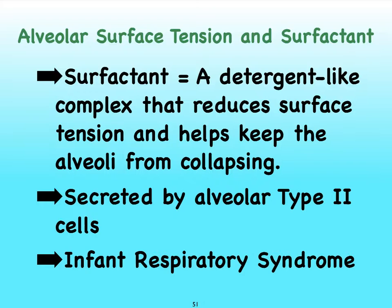When we talk about surface tension, the surface tension in the alveoli is created by the presence of water. When we inhale air, that air contains water vapor, and by the time it reaches the alveoli, it has become liquid water. Water molecules have very strong cohesive forces — they are very attracted to one another. Consequently, the alveoli have the tendency to be as small as possible. Alveolar surface tension causes alveoli to want to be as small as possible.